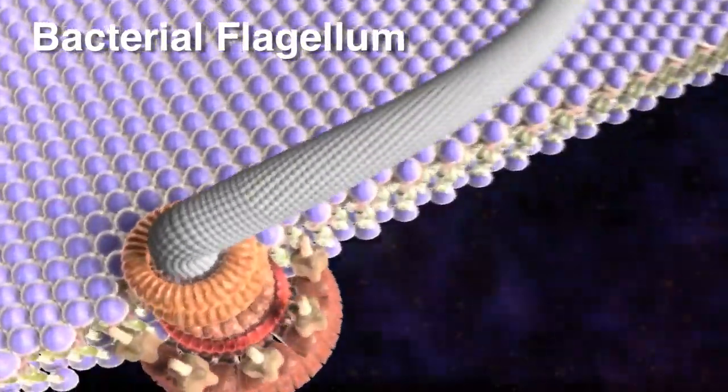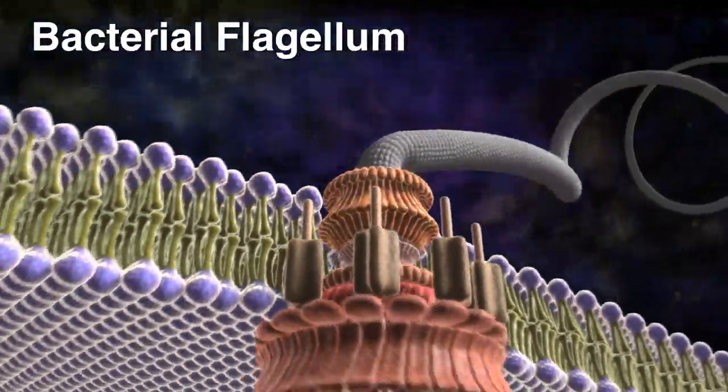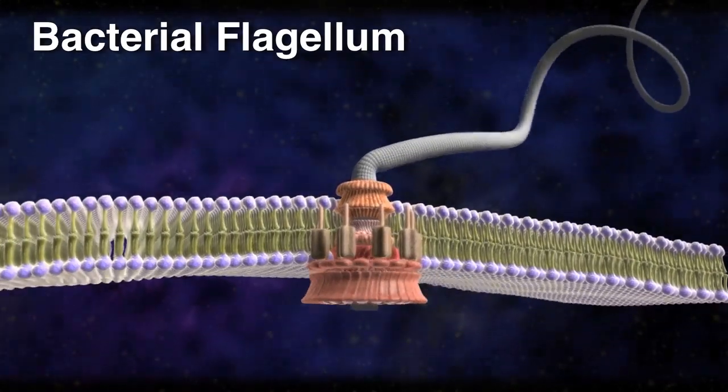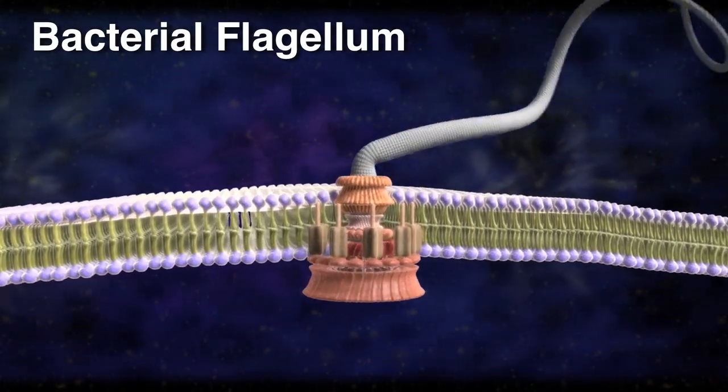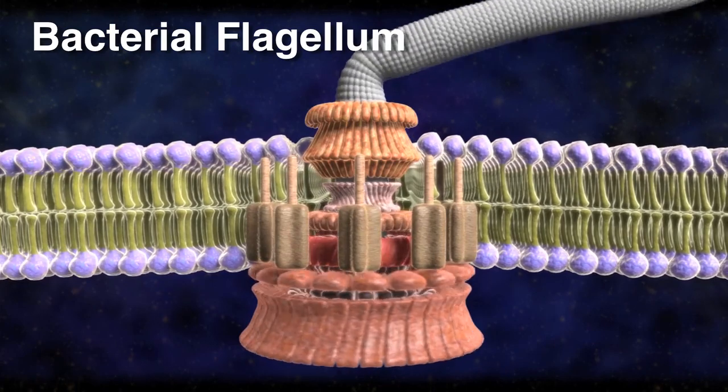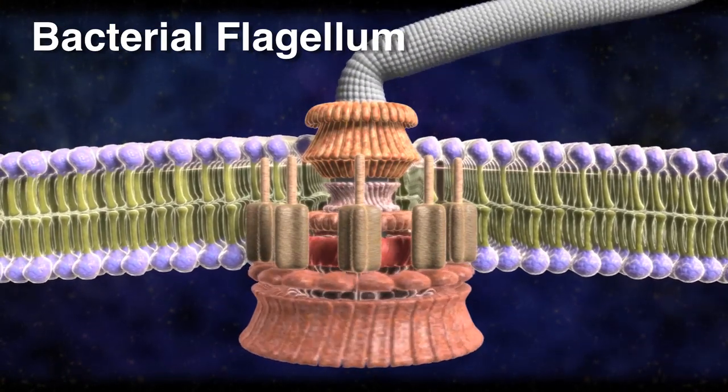Irreducible complexity means you've got a machine or system that has a number of parts and needs all those parts to work. If you take one away, the system can't work anymore — it can't be reduced. An example I used was a mousetrap. Most mechanical mousetraps have a handful of parts, and if you take away one or more, it simply can't work. You take out the spring, it's broken. You remove the little hammer that hits the mouse, and it's broken too.